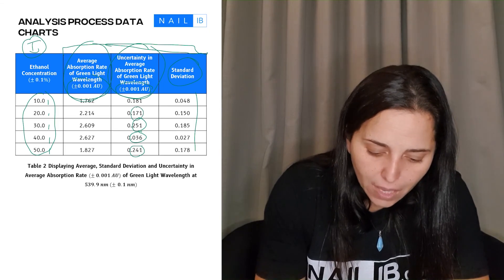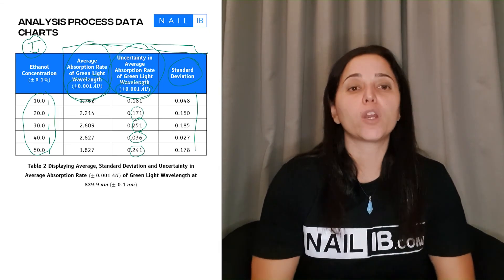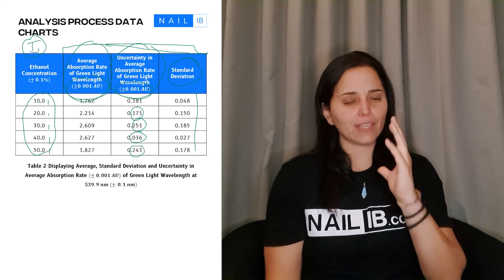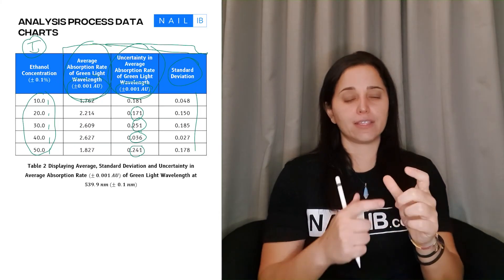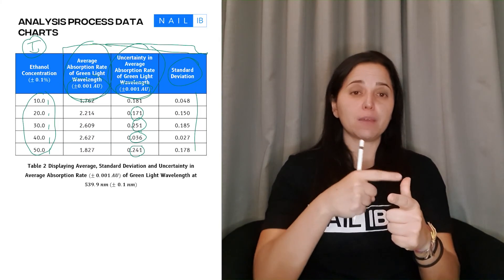Remember that when you're doing process data, it's literally once again the calculations and the tables with the results of the calculations. On the next video we're going to talk about the second part of the process data, which is the graph: how you have to do those graphs, what are the important parts, what components that must be in that graph. So for now we're ending with this one, but remember watch the next video because it's all about the graphs and how to use those graphs. And with Nail IB again, see you can get that seven. See you on the next video.